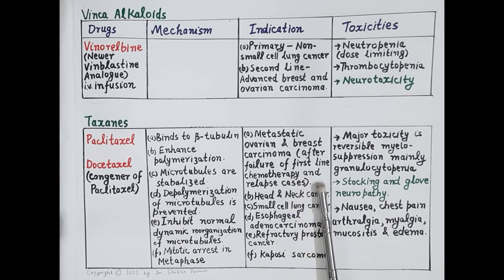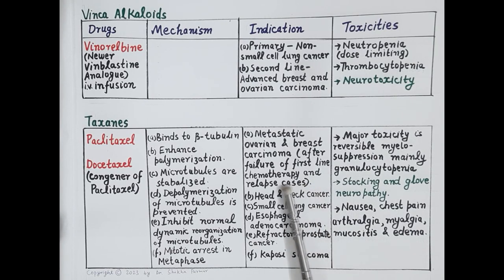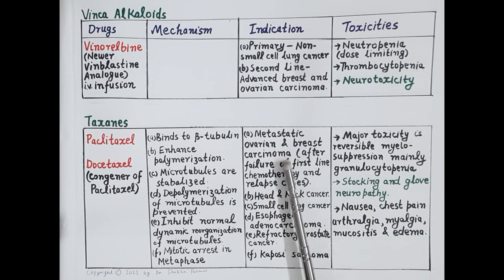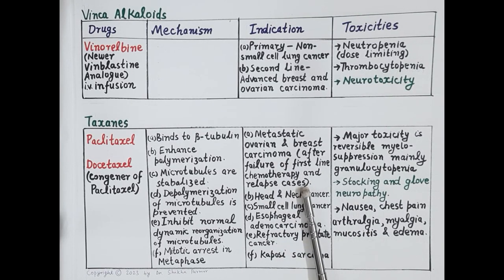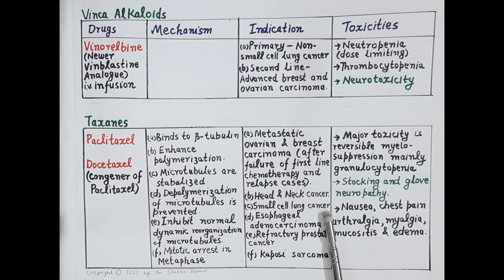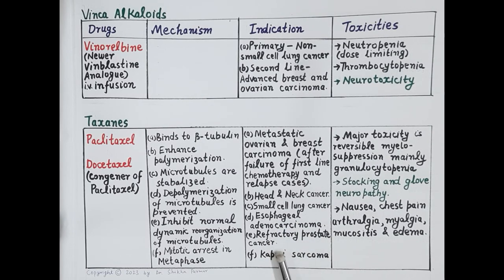After failure of first-line chemotherapy, taxanes are used in metastatic ovarian and breast carcinoma, and they are also used in relapse cases. Besides this, these drugs are also indicated in head and neck cancer, small cell lung cancer, esophageal adenocarcinoma, refractory prostate cancer, and Kaposi sarcoma.